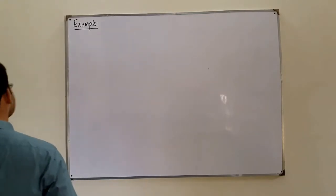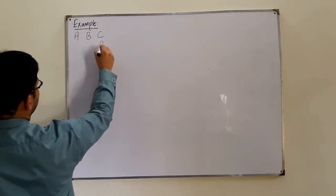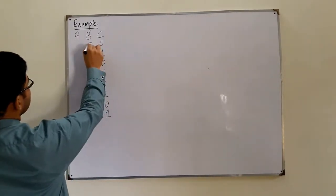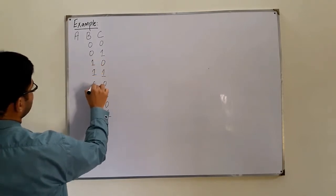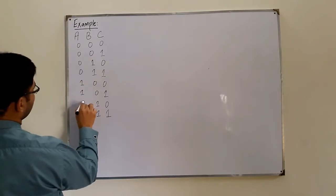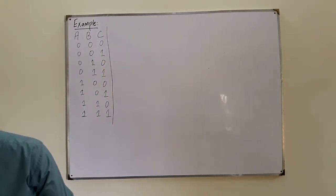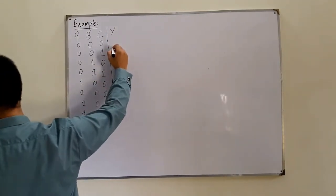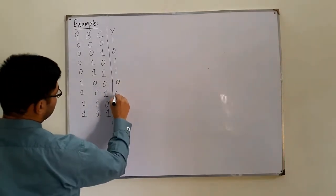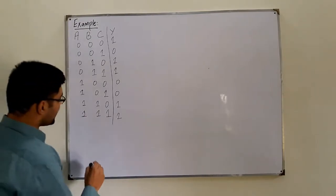Let me take a three-variable function with variables A, B, and C, so there are eight possible input combinations. These are the input combinations A, B, and C, and the function's value. The function is Y and the function's value is 1, 0, 1, 1, 1, 0, 1, 1, 0, 0, 1, 1. We have to solve this by both the POS and the SOP forms.